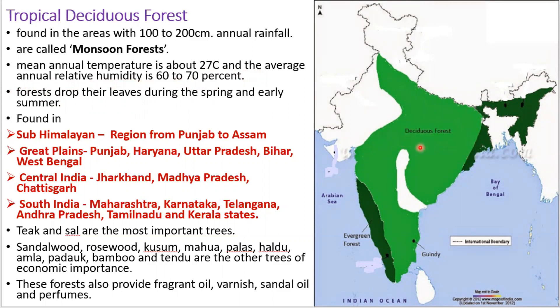They are also found in Madhya Pradesh, Chhattisgarh, and South India including Maharashtra, Karnataka, Telangana, Andhra Pradesh, Tamil Nadu, and Kerala. Teak and sal are the most important trees.